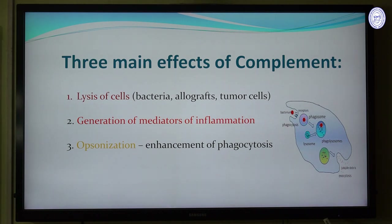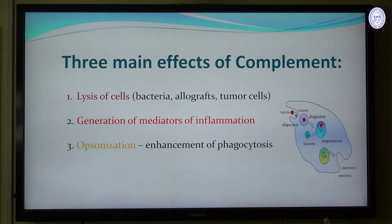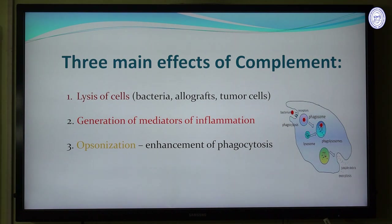There are three main effects of complement. First, complement proteins can cause cell lysis — breaking down bacterial cells, tumor cells, and allografts. Second, they can generate mediators of inflammation. Third is opsonization, which is an important part of phagocytosis — it enhances phagocytosis. Remember these three effects: bacterial cell lysis, generation of inflammatory mediators, and opsonization.